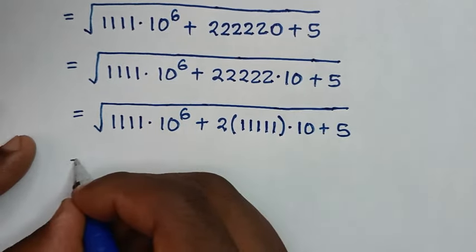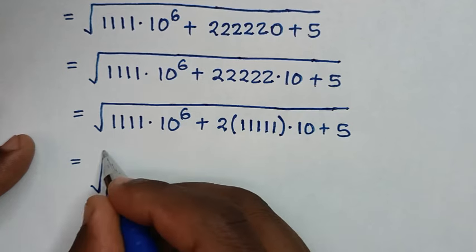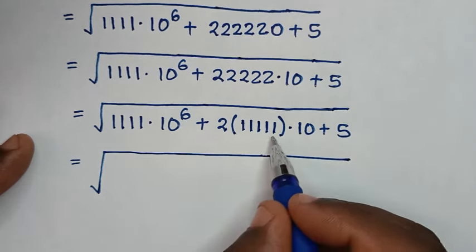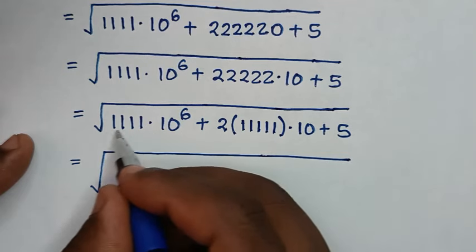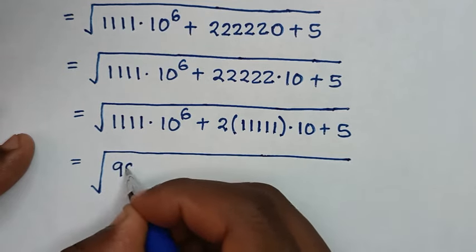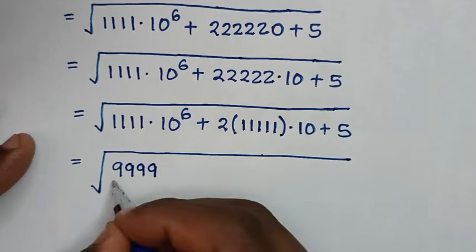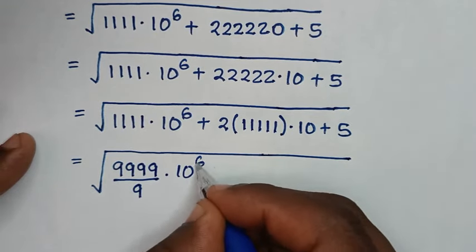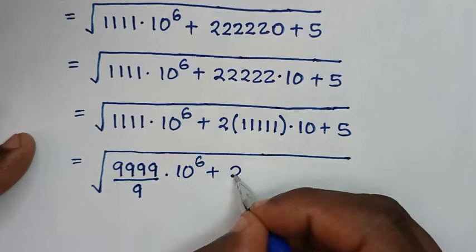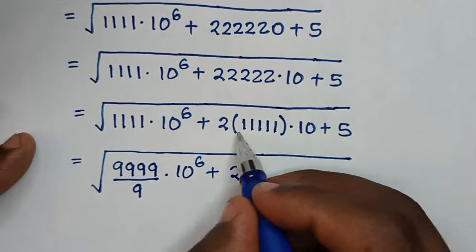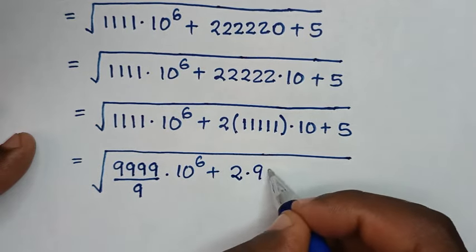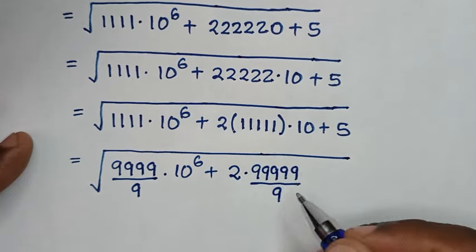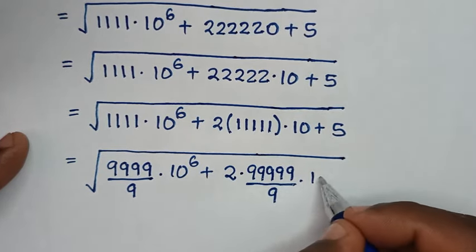Then in the next step, it will be equal to square root of — this 1s here, we make it to be 9s. So 1s is same as — here 1s we have 4 — so it's same as 9, 9, 9, 9, divide by 9. It is this. Then times 10 power of 6, plus 2 times this 1s — we have 5 — so it will be times 9, 9, 9, 9, 9, over 9.